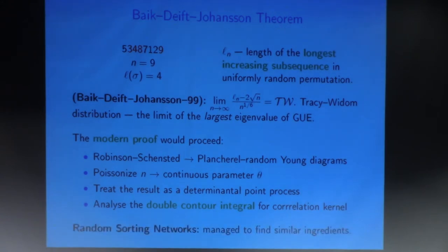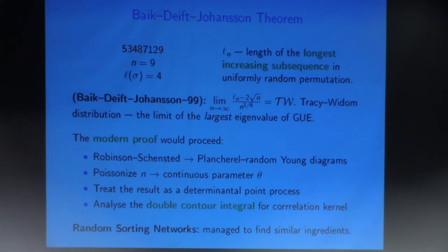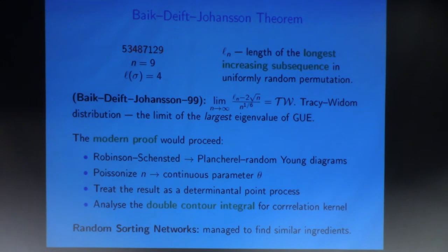On the other hand, in the random sorting letters, it turns out you can find analogs of these four steps — and that's how our proof with Mustazee Rahman works. All four steps are somewhat different: Robinson-Schensted is different, contour integrals are different, but conceptually these are the same four steps after proper modifications. So what are these four steps and how does it really work?